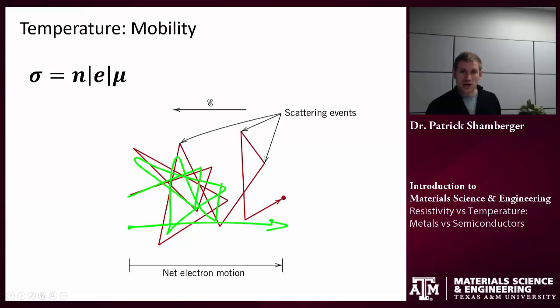So as the temperature increases, atoms tend to vibrate more and more. And so I tend to have more scattering events. So as temperature increases, the mobility decreases. It's harder for electrons to move around in the system. This is going to affect both metals and semiconductors.